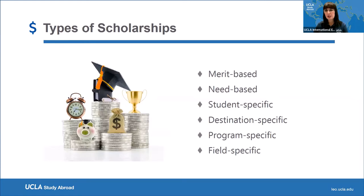The first one is merit-based. When we talk about merit-based, we usually think about GPA, but it doesn't necessarily need to be only GPA. It can be your talents, your skills, your abilities — maybe you're an athlete, or you have artistic or leadership skills, extracurricular activities, or you have done community service. This is all included in merit-based.